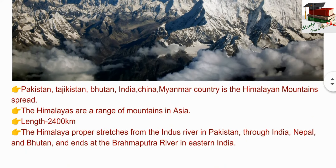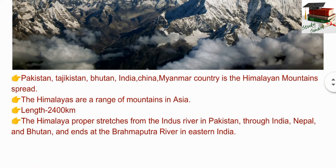Now see about the Himalaya mountain. The Himalaya mountains spread across Pakistan, Tajikistan, Bhutan, India, China, and Myanmar. The Himalayas are a range of mountains in Asia. Their length is 2400 kilometers.